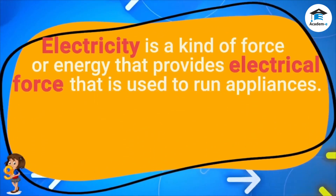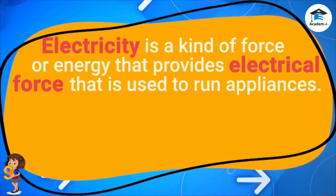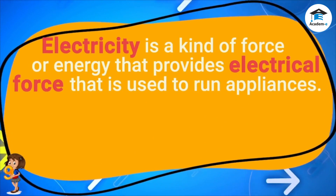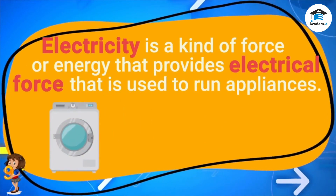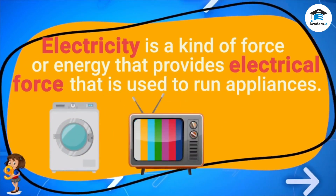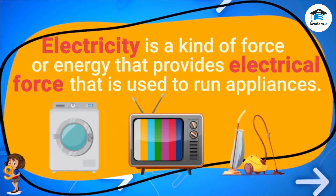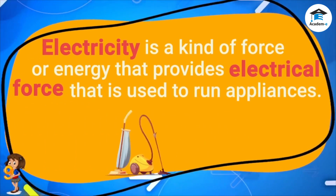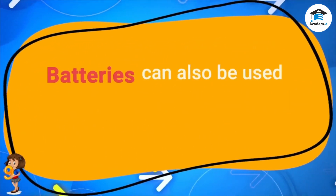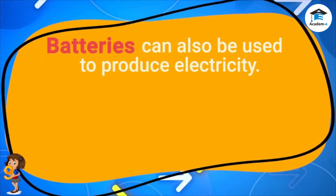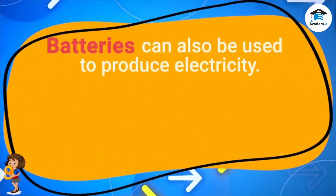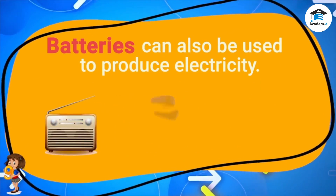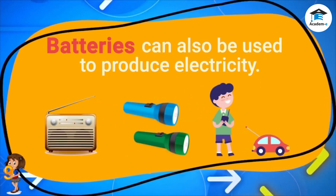Electricity is a kind of force or energy that provides electrical force used to run appliances like washing machines, televisions, and vacuum cleaners. Batteries can also be used to produce electricity. They make radios, flashlights, and toys work.